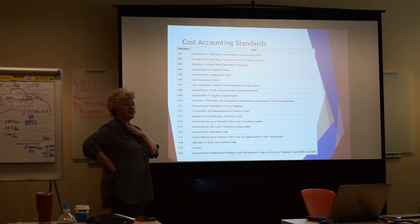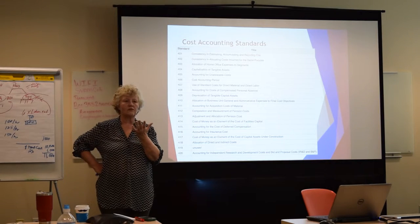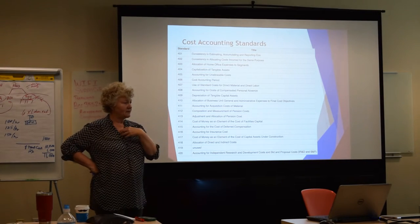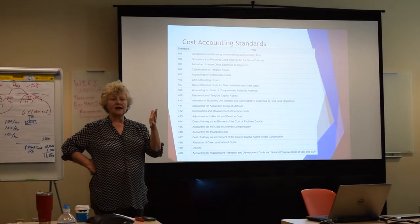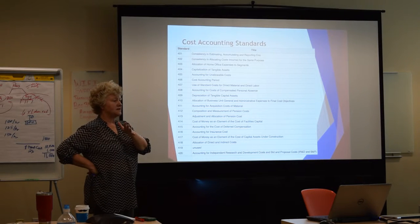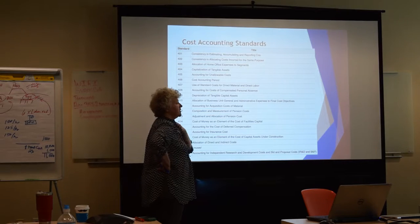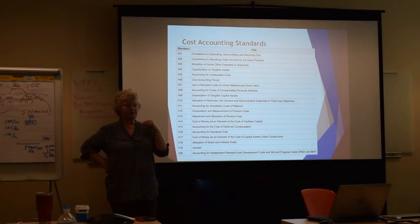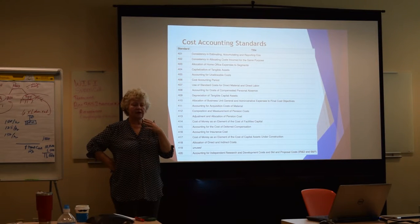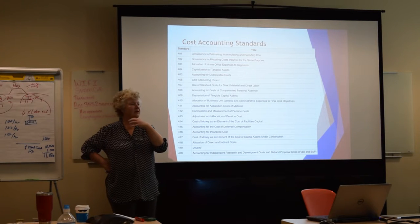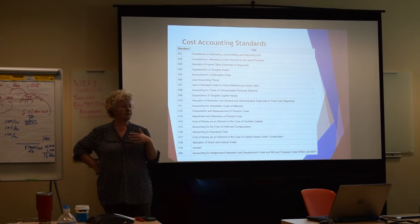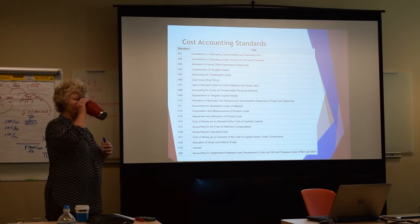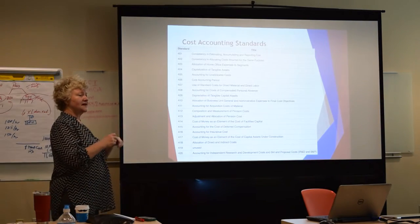Accounting for unallowable costs: if I put the cost of my Chivas on an expense report, the government is not going to pay it. Has your company decided to pay for that, and how are you capturing that unallowable cost? Also, the government doesn't want you to overwork your people. At one point, companies were bidding 40-hour work weeks, but other companies were saying that in their office everyone works 50 hours a week — so they'd bid a lower price because they knew their people would work 50 hours, not 40. That becomes a disconnect, and that becomes an unallowable cost.